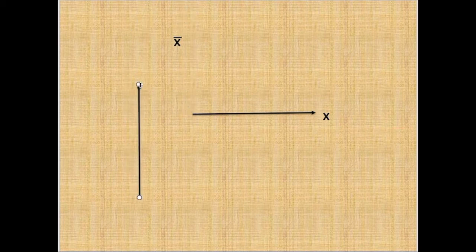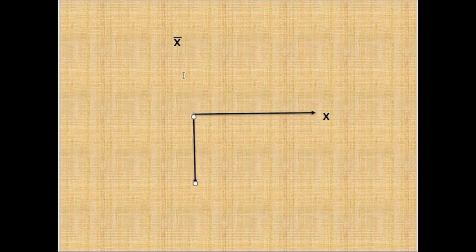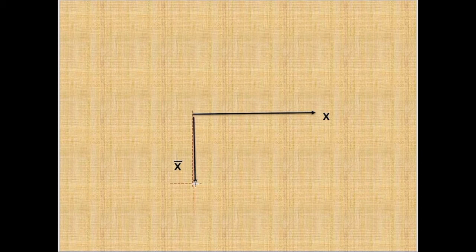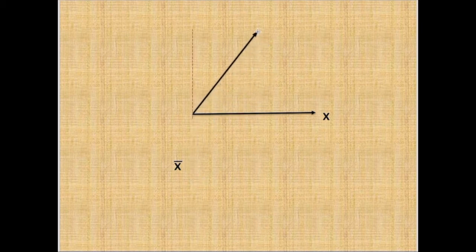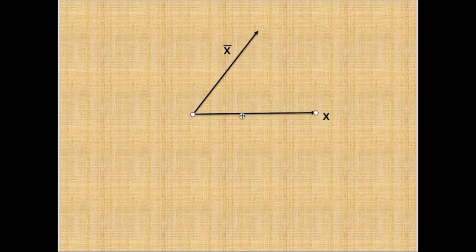If the frame is below in this shape, the angle will be calculated from the X origin also in a clockwise direction, so it will be 90 degrees. If the frame is on this shape, the angle has to be calculated from the X origin also in the clockwise direction. So if this is 45 degrees, the angle will be 360 minus 45, which will be 315 degrees.